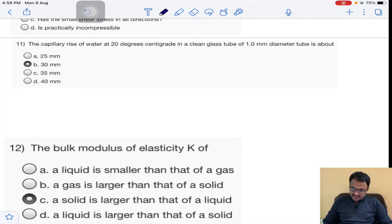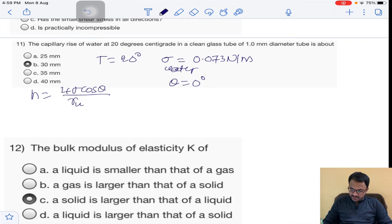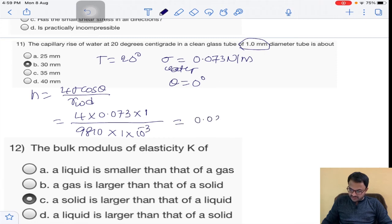Now capillary rise at 20 degree centigrade. At T=20°C, we know surface tension σ = 0.073 N/m for water, and for water θ=0°. Capillary rise H = 4σcosθ / (γw × d). That is 4 × 0.073 × cos(0) / (9810 × 1×10^-3). You get 0.0297 meters. In millimeters, it will be 29.7 mm, approximately 30 mm. Option is B.